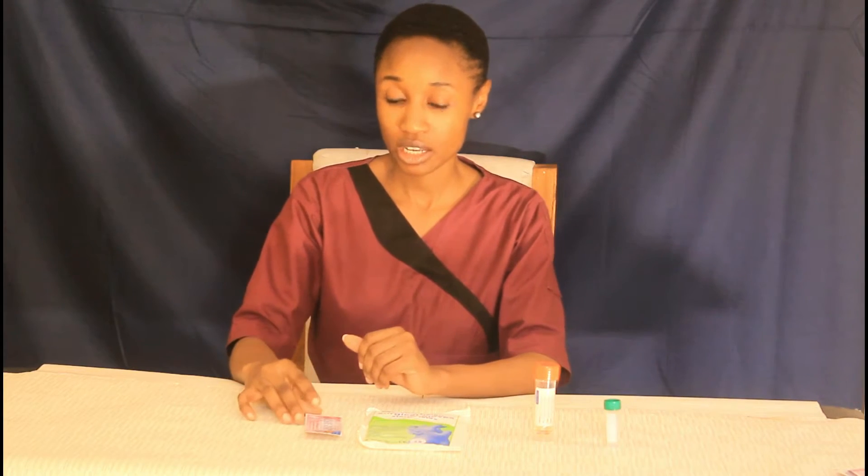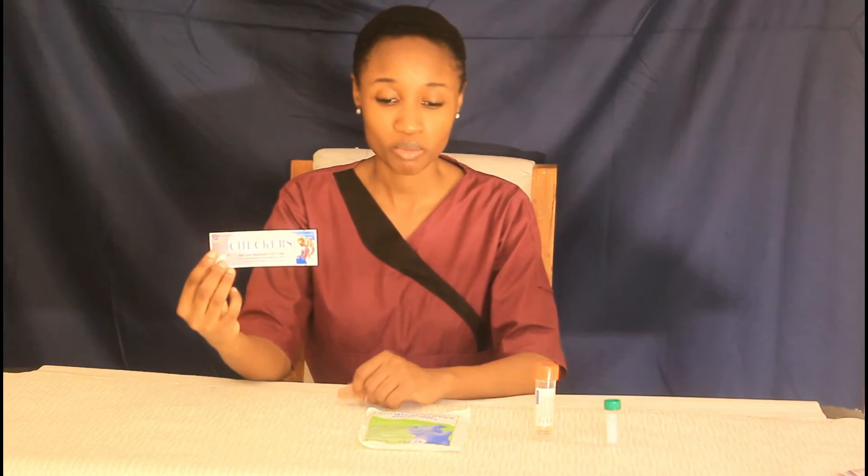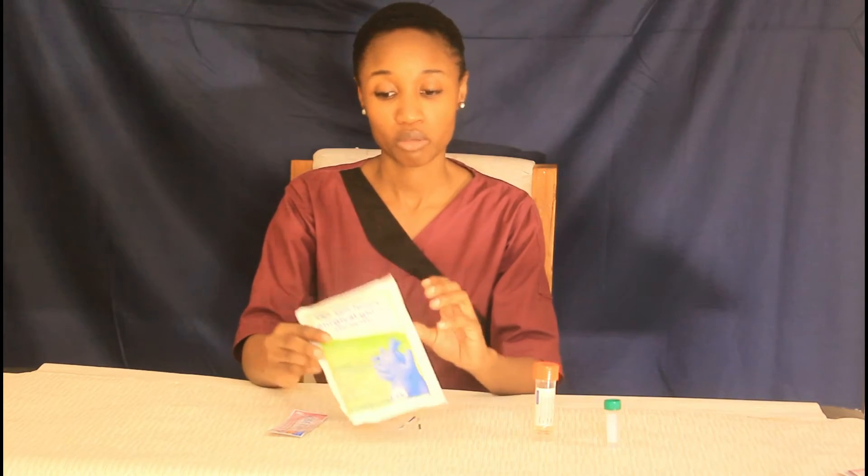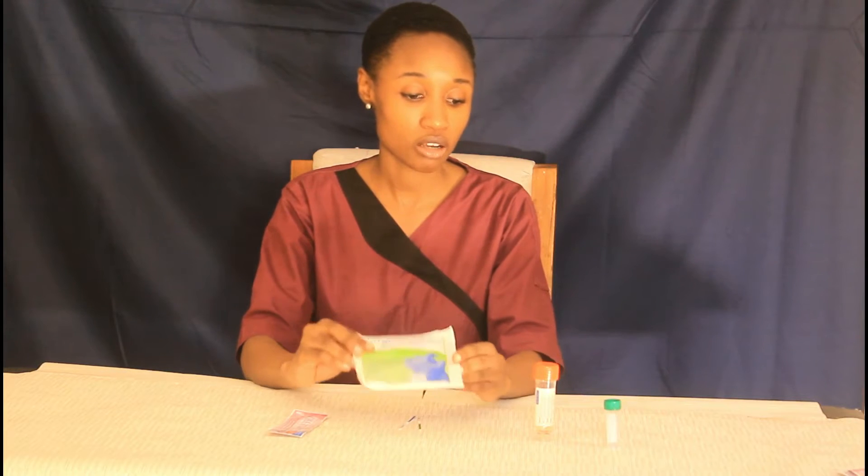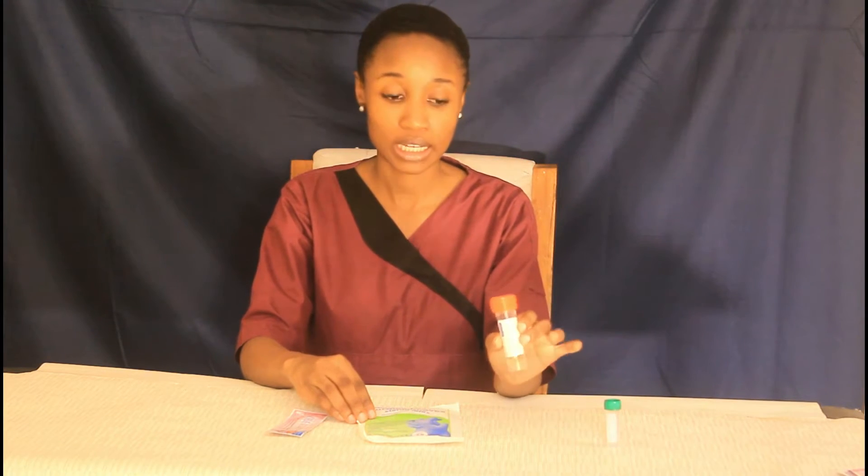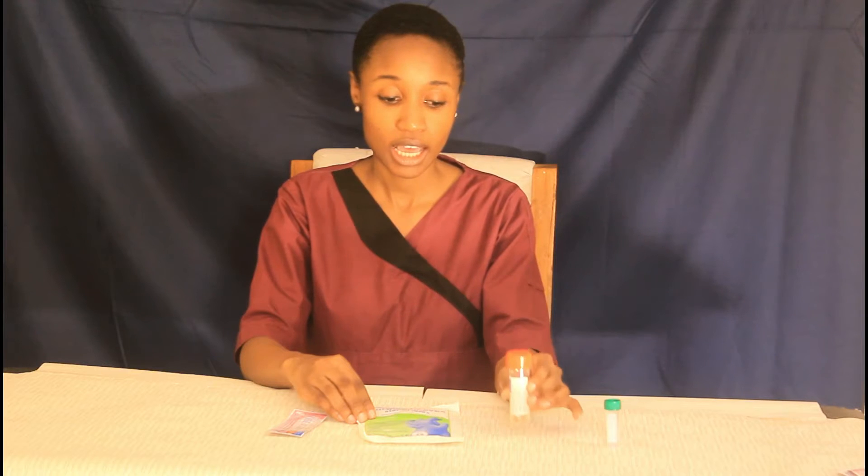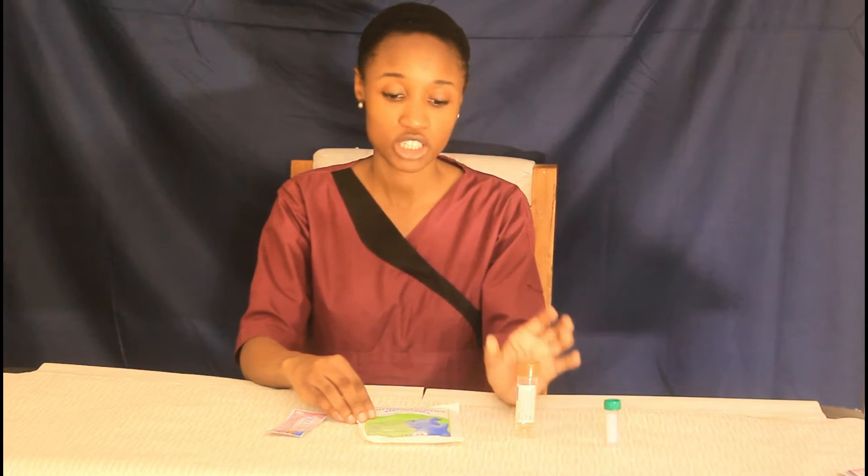So to do a pregnancy test at home you will need to have a pregnancy test strip, you can use gloves if you're in a clinical setting, your early morning urine and a sample to place it in and a timepiece so that you can check the time.